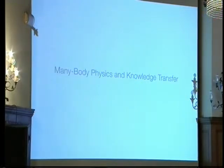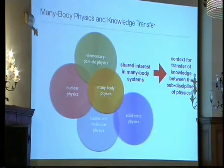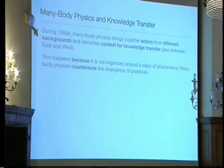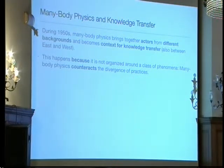Many-body physics provides an ideal context for transfer of knowledge between sub-disciplines of physics at a time when they were supposedly turning monolithic. During the 1950s, many-body physics brings together actors from different backgrounds. It also becomes a context for knowledge transfer between East and West — especially between the United States and Soviet Russia — where developments sometimes happened in parallel, with increasing interaction between theorists from both sides of the Iron Curtain from the mid-1950s onwards.